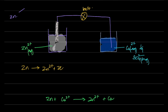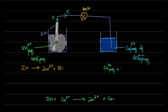So far, we've put zinc in a solution of its ions, with electrons traveling through the wire to the copper half. The copper 2+ aqueous ions gain those two electrons to become copper metal. This setup is called an electrochemical cell — the same zinc-copper reaction, but separated so we can isolate and measure the electron transfer.